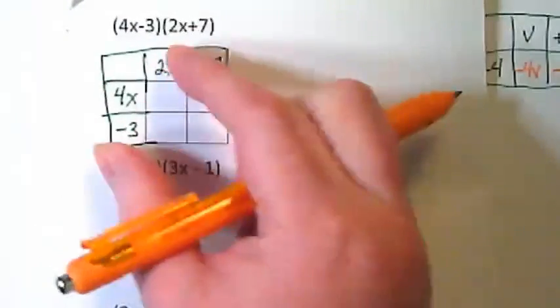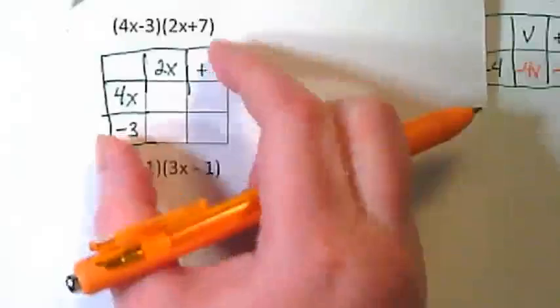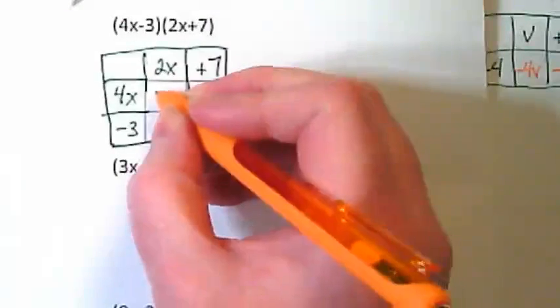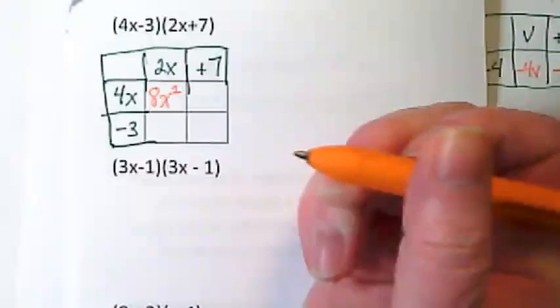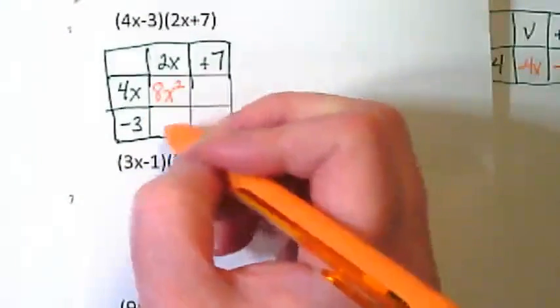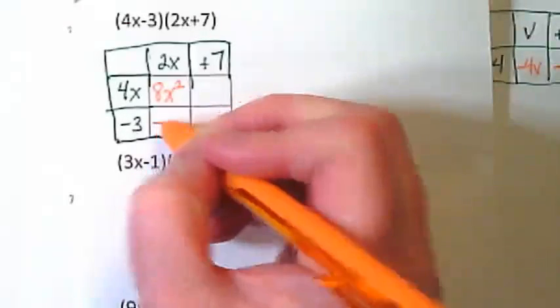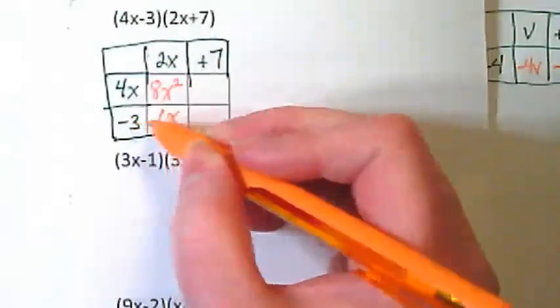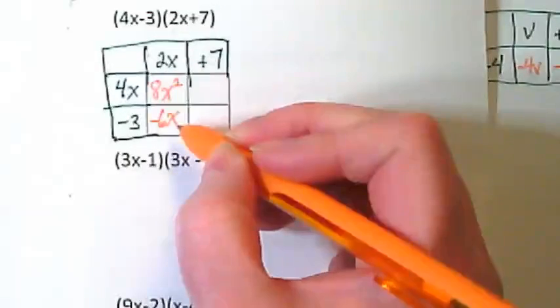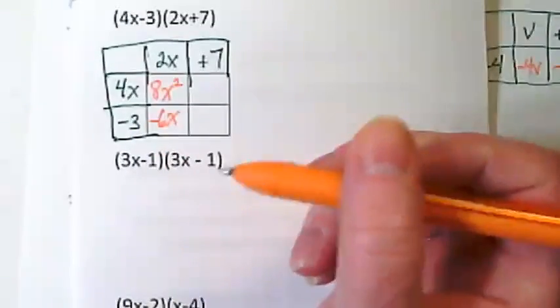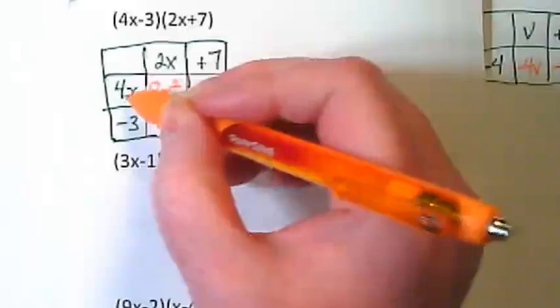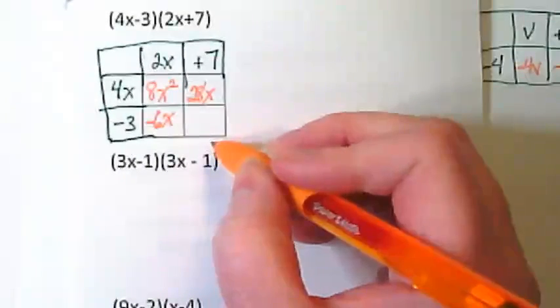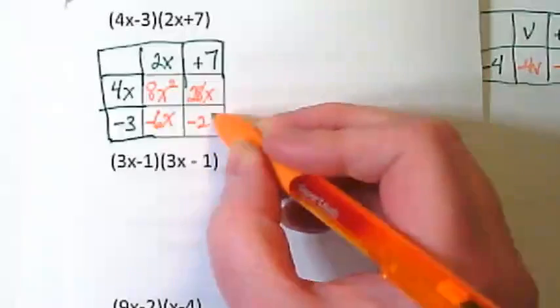Let's multiply. These two are going to go here, these two here. Again, this is just like a times table. 2x times 4x is 8x squared. What are we going to put in this space down here? Negative 6x, because 2 times negative 3 got us to negative 6, and x is just being brought down. And then 7 times 4 gives us 28x. And what goes into our last box? Negative 21.